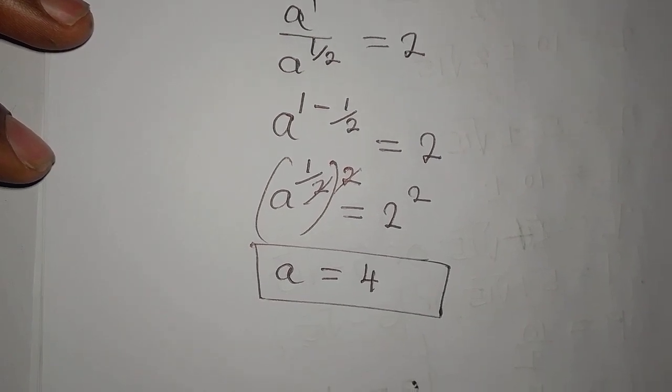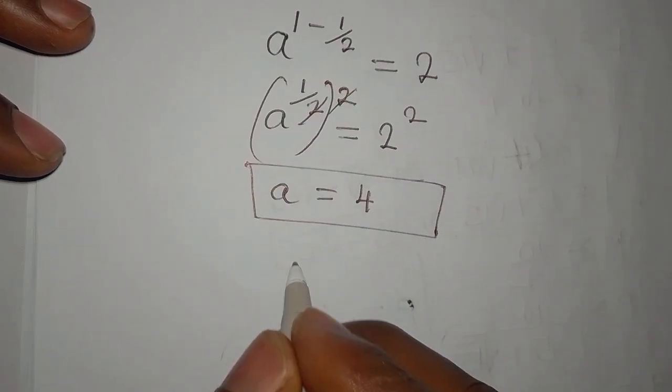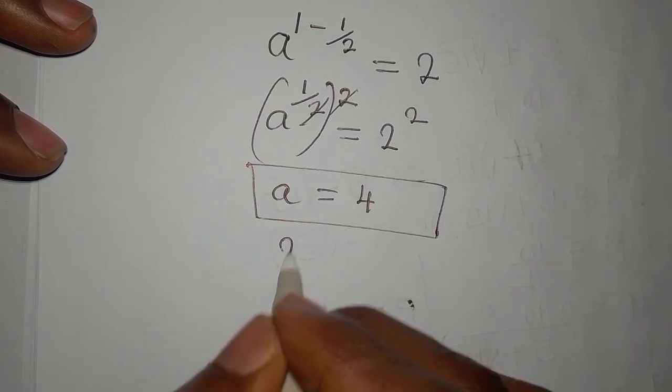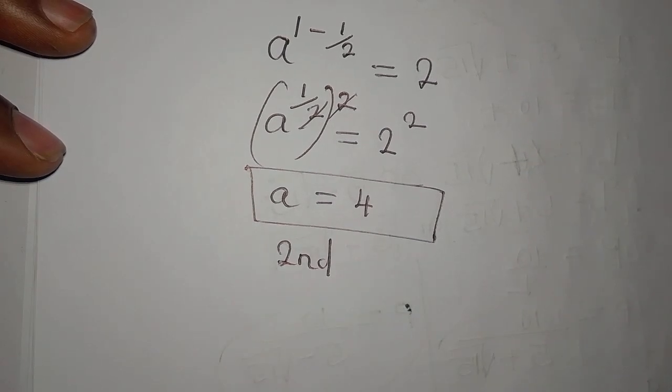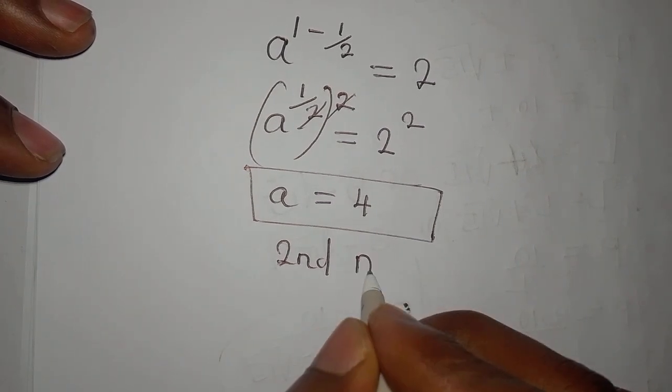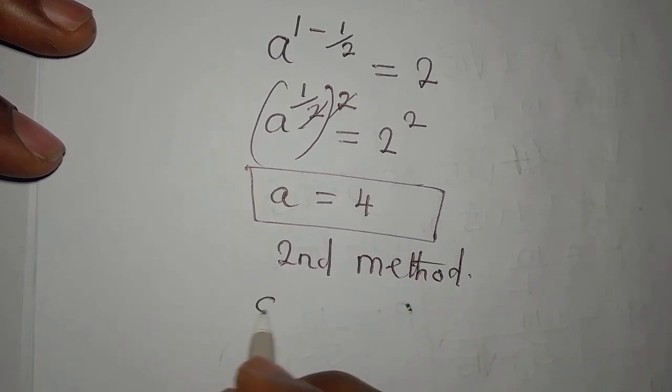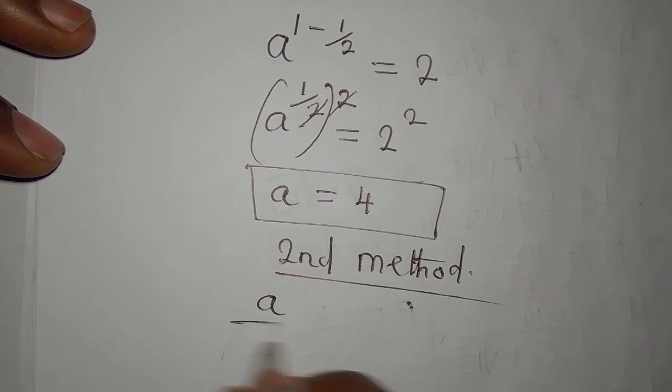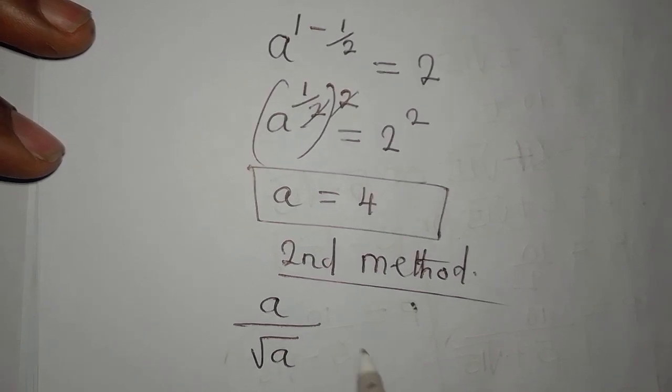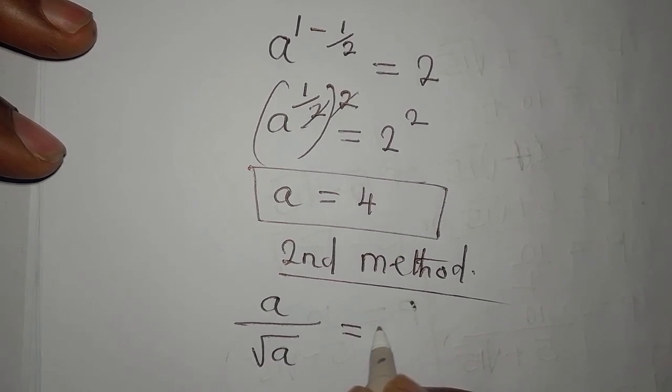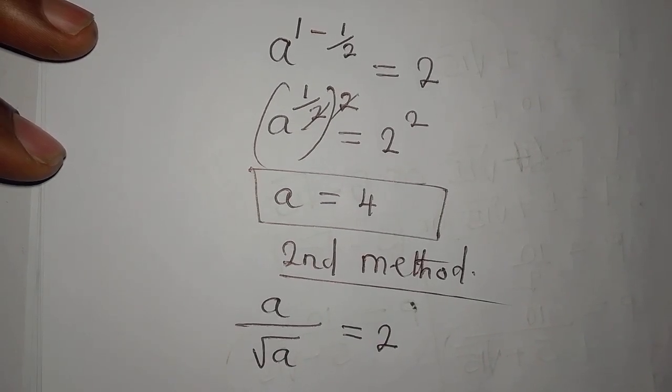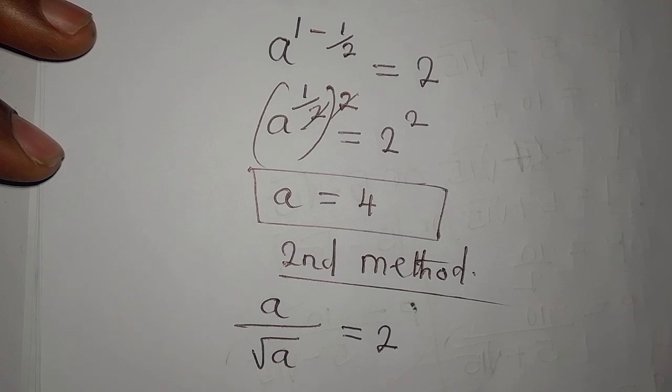Okay, from the first method, now let us get the second method. Second method. We have a over the square root of a equals 2. Now using the second method, I'm going to cross multiply.